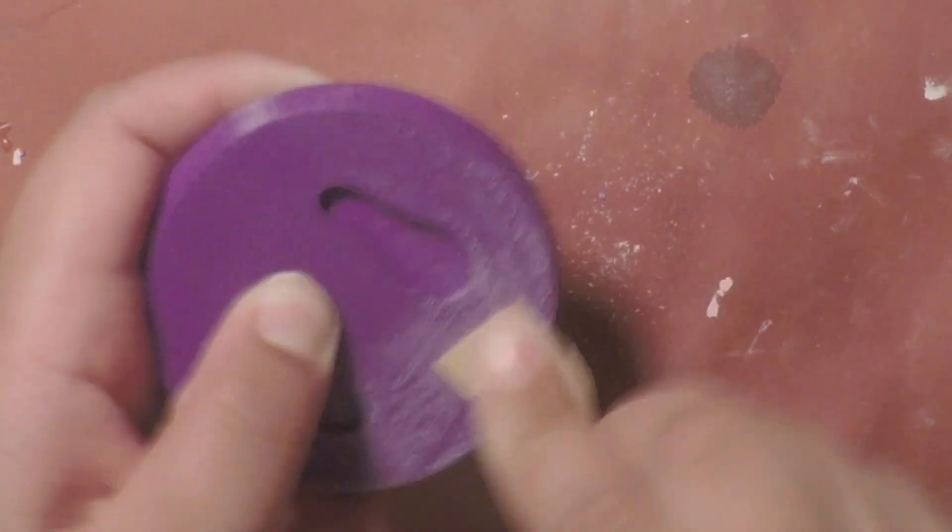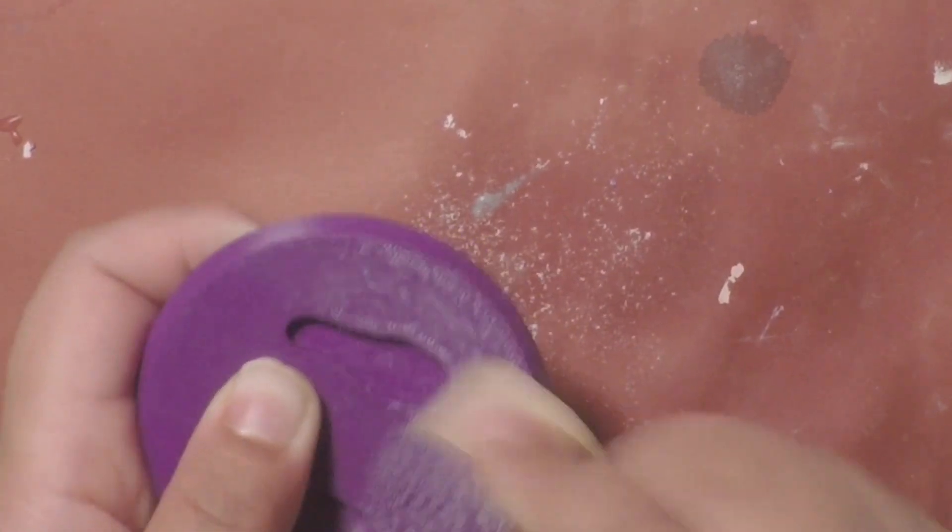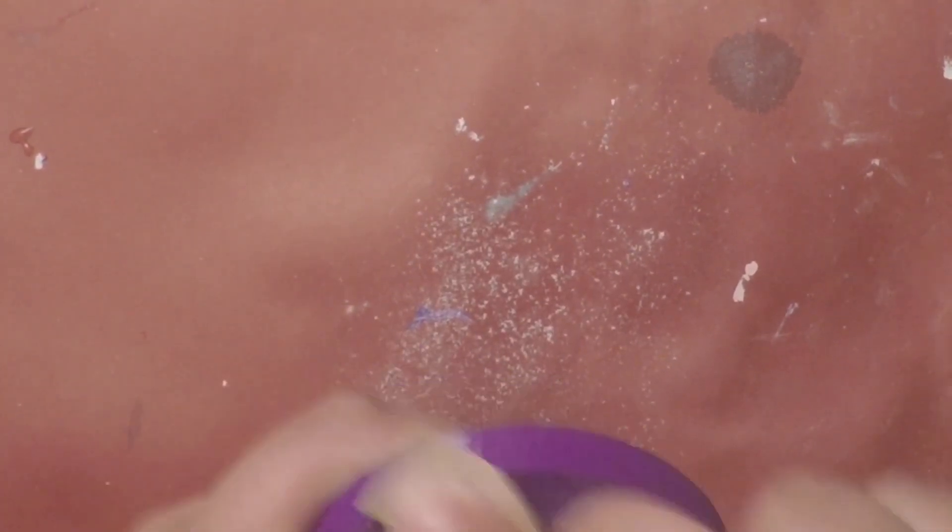And then sanding the base. You'll see that the model is getting kind of scuffed up and cloudy. This is fine because we're going to paint all over this later.